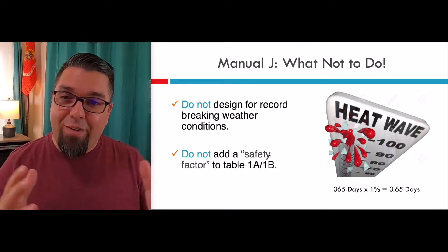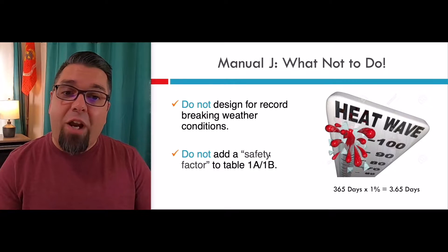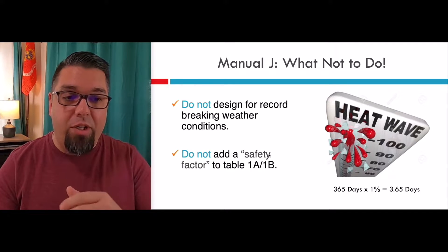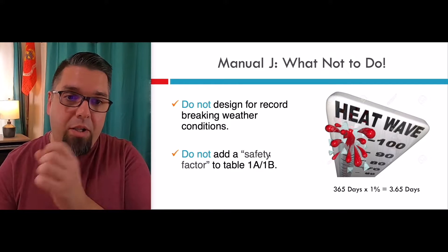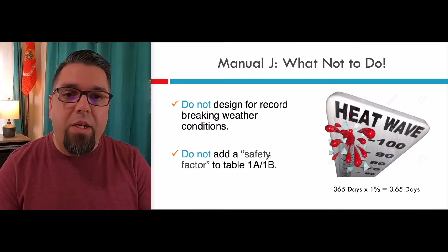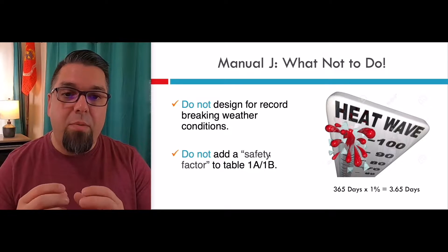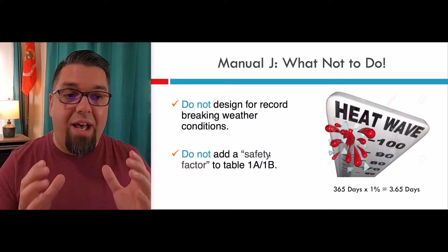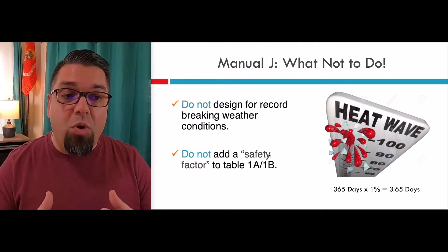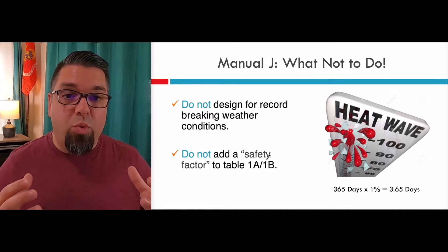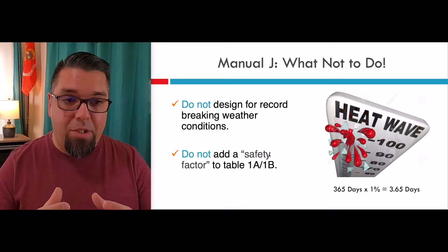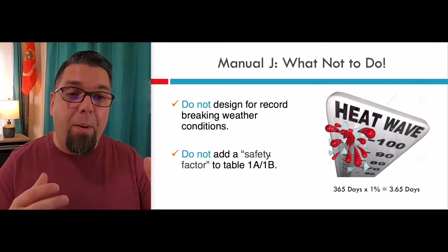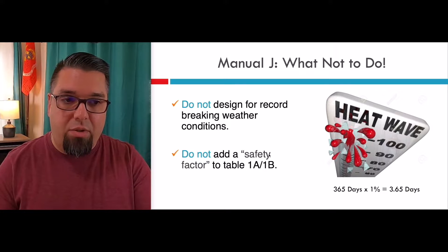This should be obvious, but I still see it out there: do not design for record-breaking weather conditions. We design using Table 1A — or Table 1B if you're in the dry part of the country — or for microclimates like Hawaii or Miami. These are different design temperatures. That's really the 99% design temperature, meaning if you add up all the hours at that temperature or above in cooling, it equals 3.65 days total. If you design around 99.9%, you're going to drastically oversize the system for no reason and have big problems under part-load conditions.